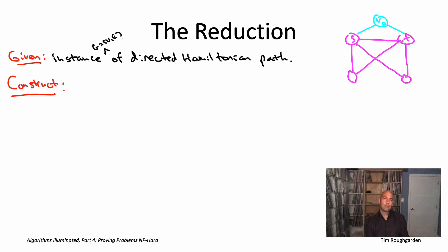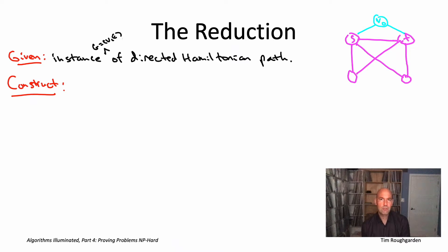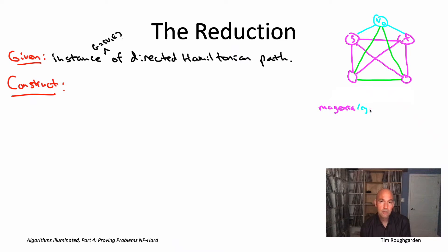Now we want to invoke the assumed subroutine for the traveling salesman problem, which expects a complete graph with edge costs. So we fill in all the missing edges. The original edges have cost zero, and all the edges which were missing and that we put in have a cost of one.